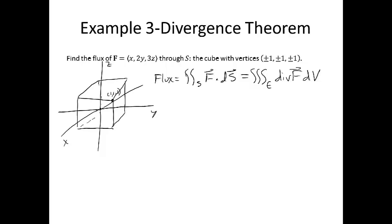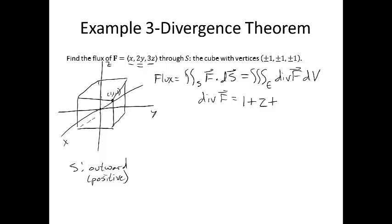Now you may ask: what about the orientation? You're not told to find the outward flux or that S has an outward orientation. But with closed surfaces, you can assume — even if it's not specified — that you're talking about an outward or positive orientation. That's always the default unless told otherwise. So the divergence of the vector field is the partial of x with respect to x, which is 1, plus the partial of 2y with respect to y, which is 2, plus the partial of the third component with respect to z, which is 3. So the divergence of F equals 6.